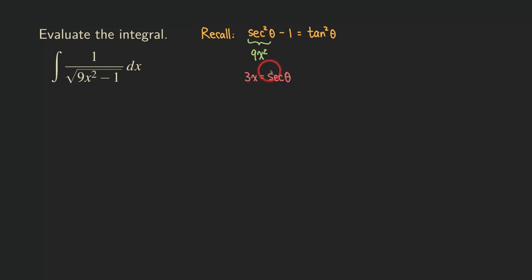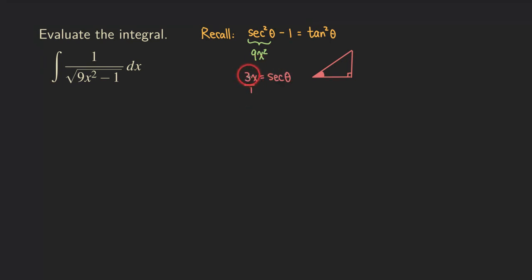Based on the expression secant theta equals 3x, we can set up a right triangle. The reference angle is theta. We can write 3x as 3x over 1. Since secant is the hypotenuse over the adjacent — because cosine is adjacent over hypotenuse, and secant is its reciprocal — I'm going to label the hypotenuse as 3x and the adjacent side as 1.